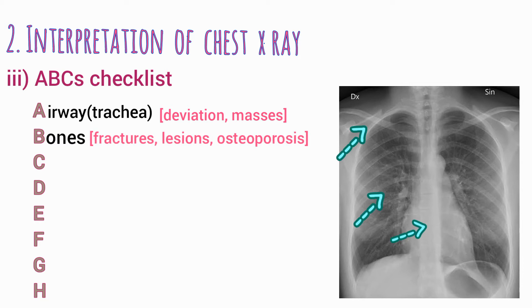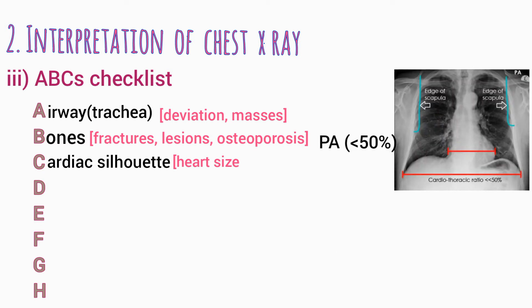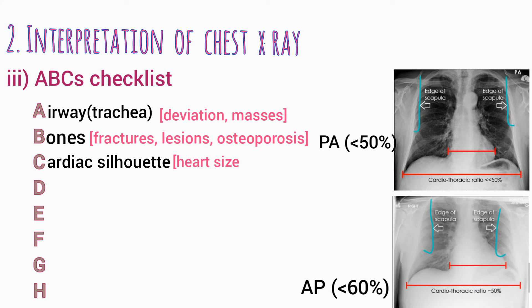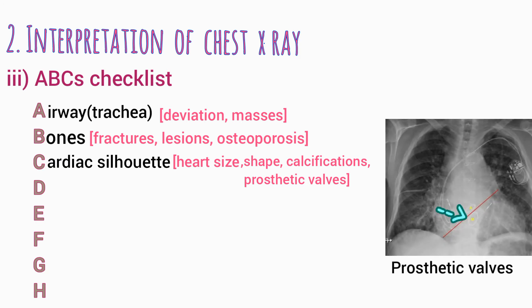For bones, scan for fractures, lesions, and osteoporosis by checking bone thickness and density. C is for cardiac silhouette — first evaluate heart size, which should be less than 50% of chest diameter on PA films and less than 60% on AP films. Then check for heart shape, calcifications, and prosthetic valves.